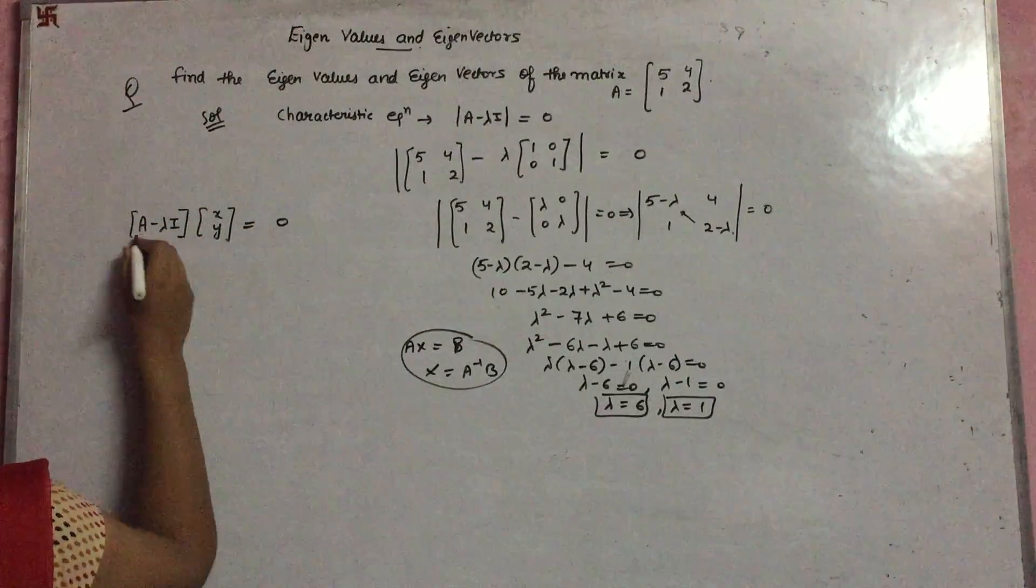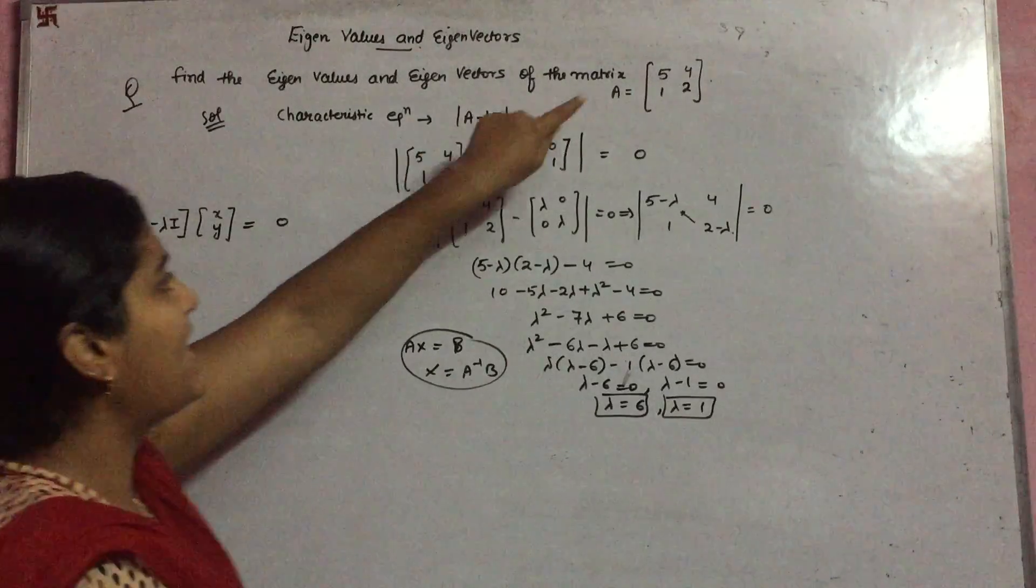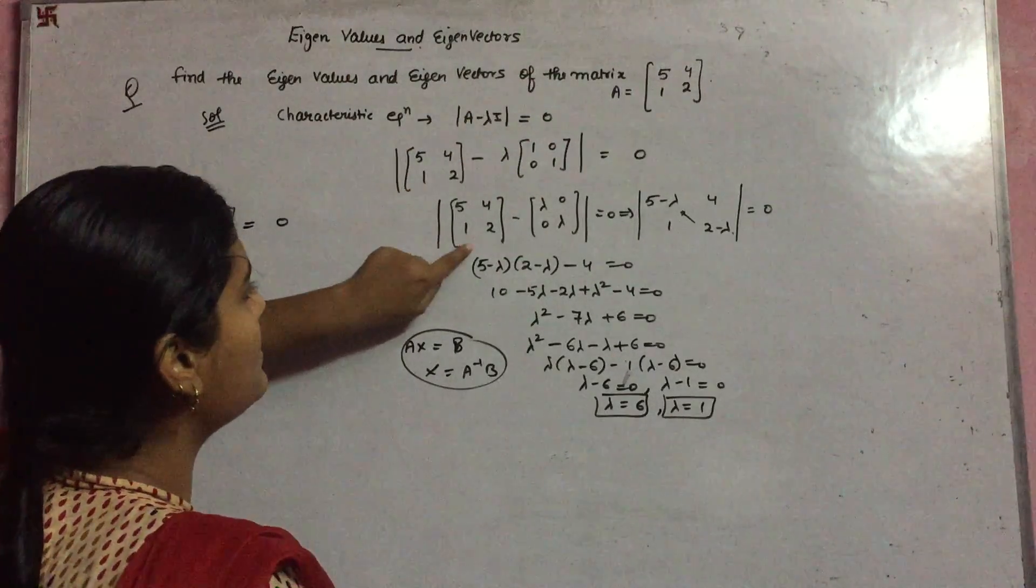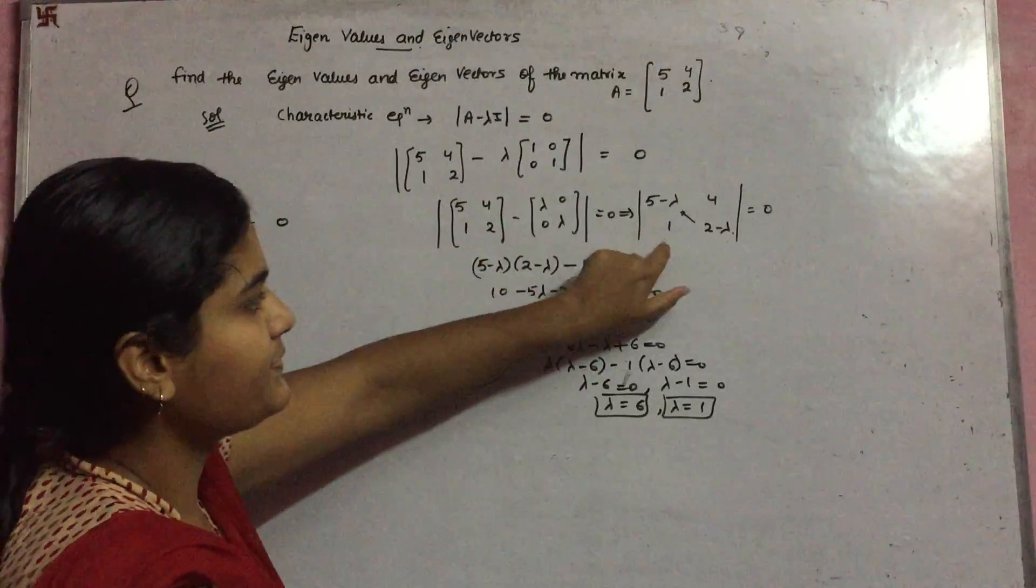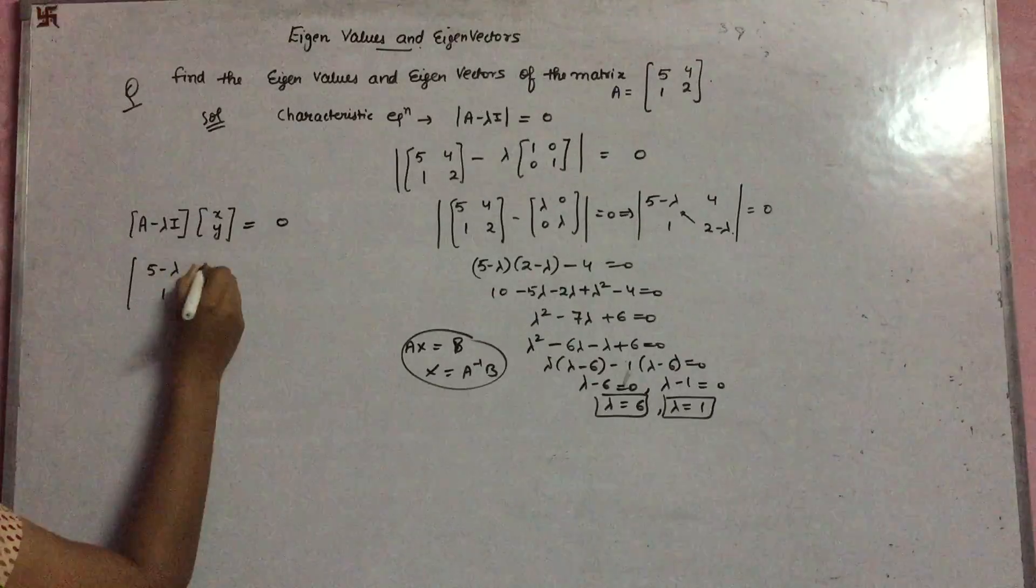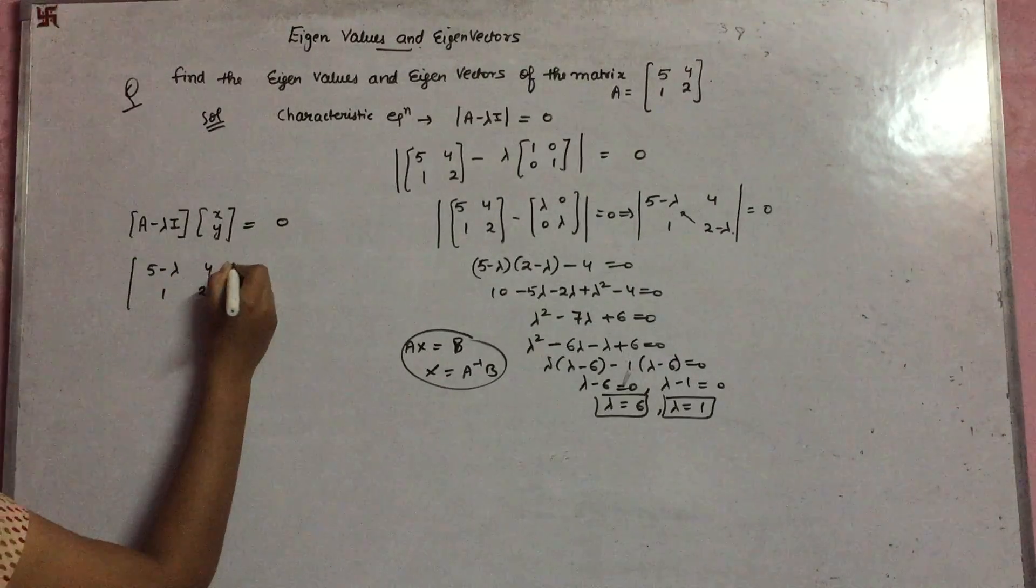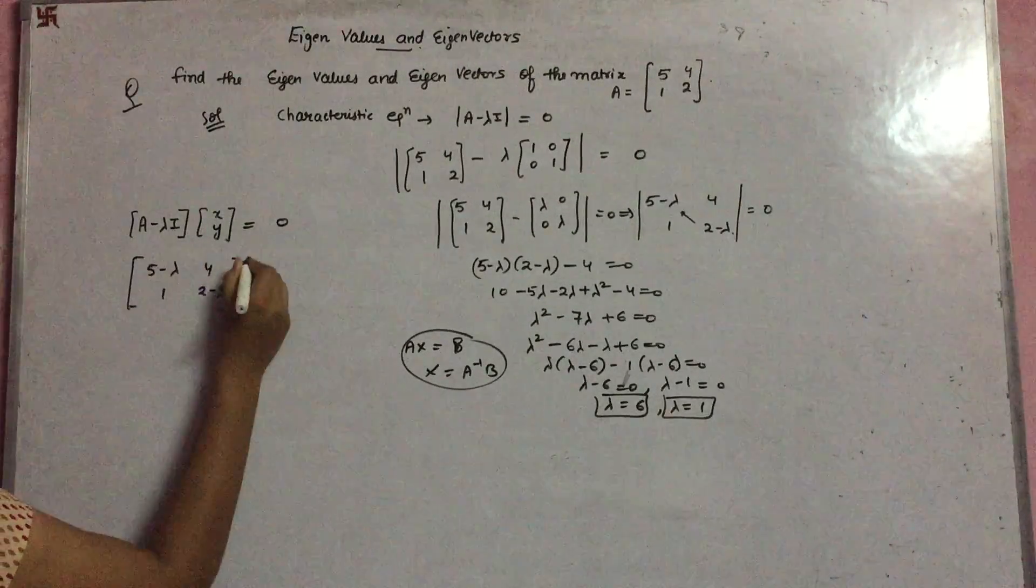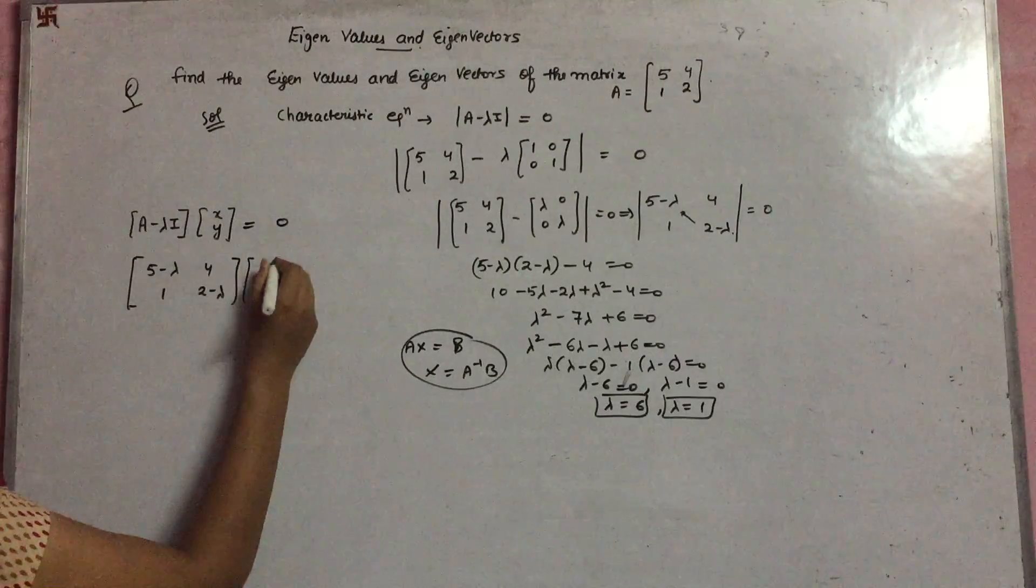You put it as zero. A - λI is like this: you have to put... this is your A - λI, and this is your [x,y].